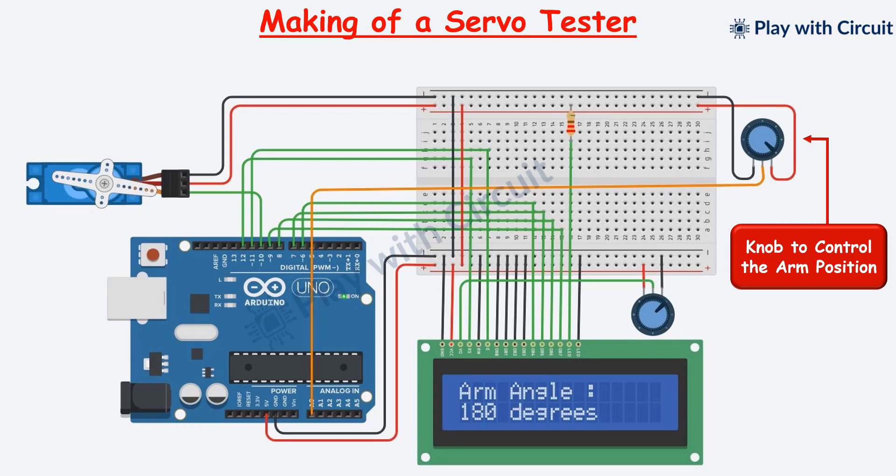A servo tester is a device used to test and calibrate servo motors. A servo tester typically consists of a small electronic device with knobs or buttons that allow users to manually adjust the position of the servo motor and test its responsiveness.